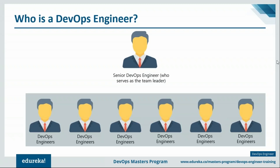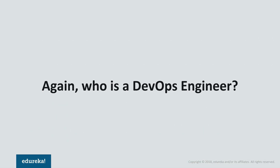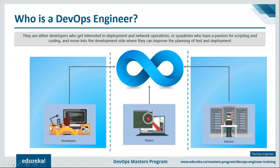The other engineers are responsible for implementing and maintaining that delivery process. DevOps engineers are generally developers, admins, or even testers who have a passion for scripting and automation. They learn a few concepts that can separate them from the crowd.